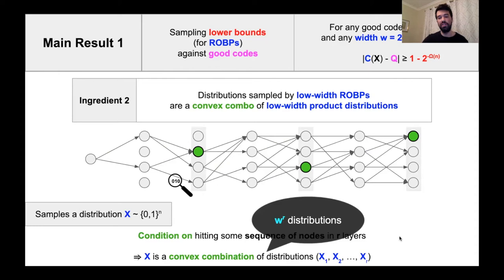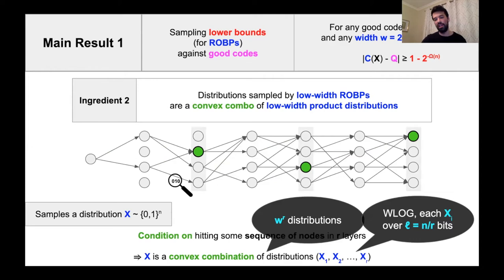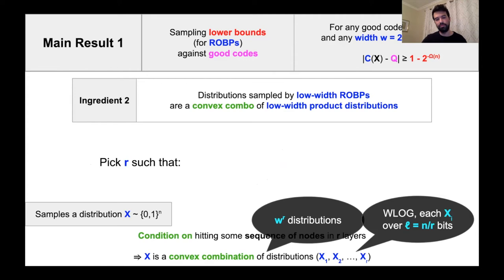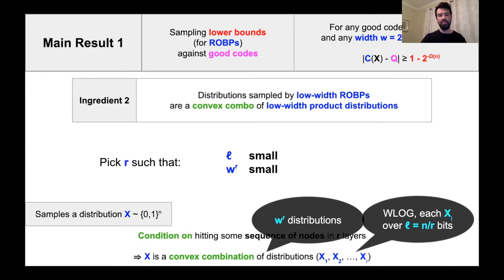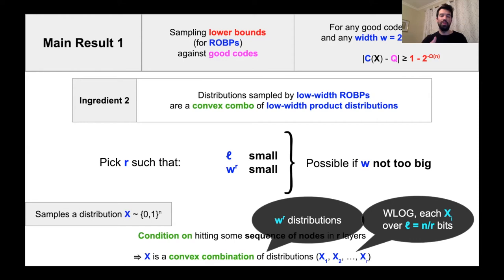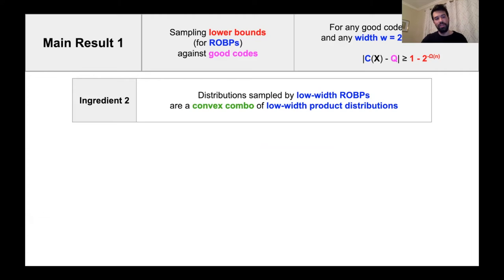We'd like to pick R so that two things are true: L should be small because we want a convex combination of low-width product distributions, and W^R should be small because we'll invoke ingredient one which bounds the number of participants. Since R times L equals N, one of these can't be too small. But if we ensure the width W of the branching program is not too big, we can make sure both quantities don't get too ridiculously large.